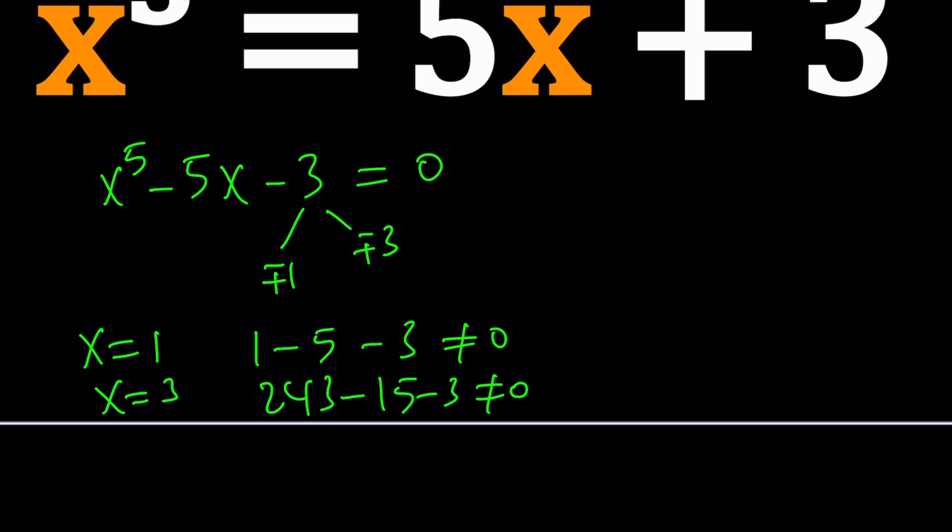So we have no luck with the rational root theorem. There are no rational solutions. That's what it means. So the solutions are either irrational or not real, like complex.